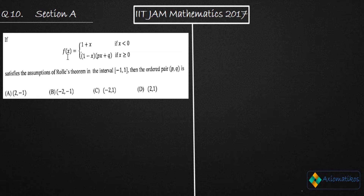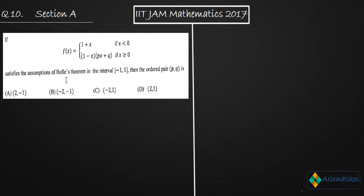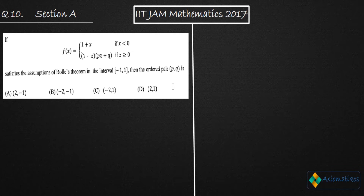We have a function f(x) which is a piecewise function. It is given that it will satisfy Rolle's theorem on this interval, and we need to find the ordered pair (p, q). We already know that f satisfies Rolle's theorem, so we just have to figure out the values of p and q.